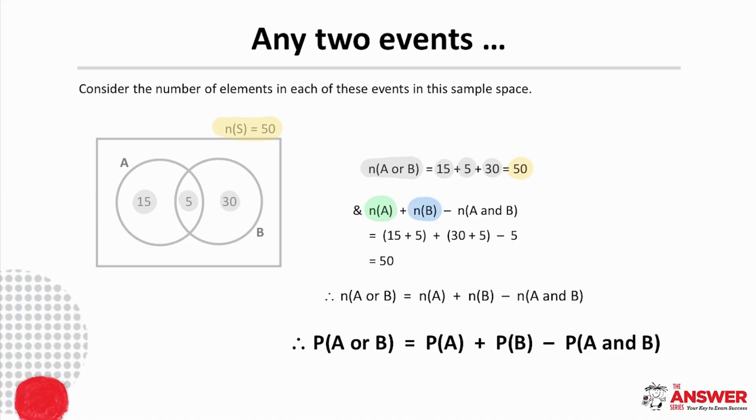And so to make sure we don't count the overlap twice we add the number of elements in A and the number of elements in B and subtract the number of elements in the overlap. In other words for any two events the number of elements in A or B equals the number of elements in A plus the number of elements in B minus the number of elements in A and B.